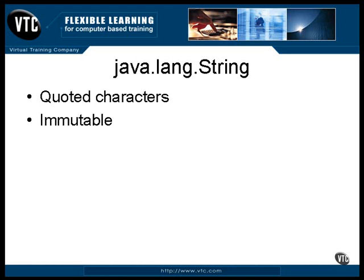A string object is immutable. That means once you create a string object, you can't change it. The contents of the object remain the same as long as that object exists. The only way to modify a string is to create a new object with the modified contents.